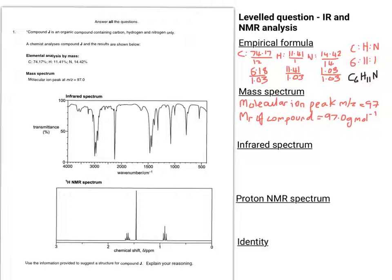So if you take the molecular ion peak as 97 m/z, that means the MR of the compound must be 97 g per mole, which also happens to match C6H11N. So we can say that's the molecular formula of the compound.